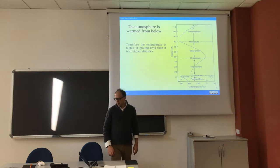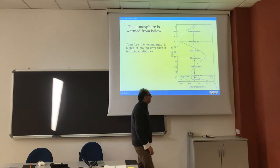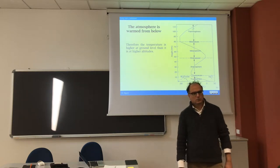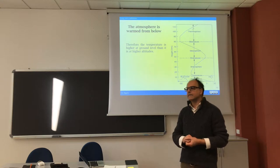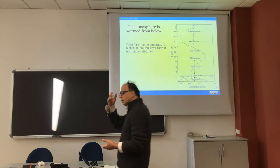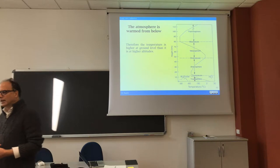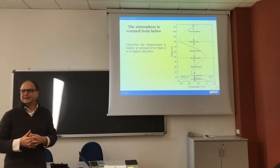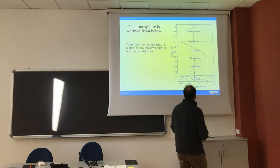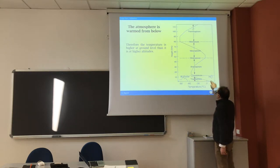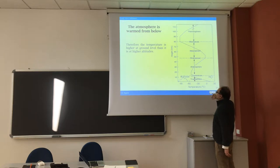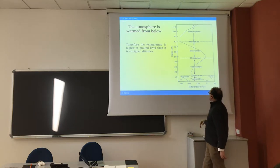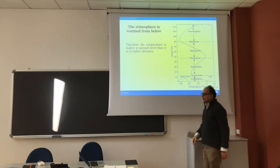The atmosphere is not transparent to longwave radiation warming from below, meaning the atmosphere is warmed from below rather than from the top — it is more like a boiling device for making pasta that is heated from below. So the temperature is higher at the bottom and decreases with height.